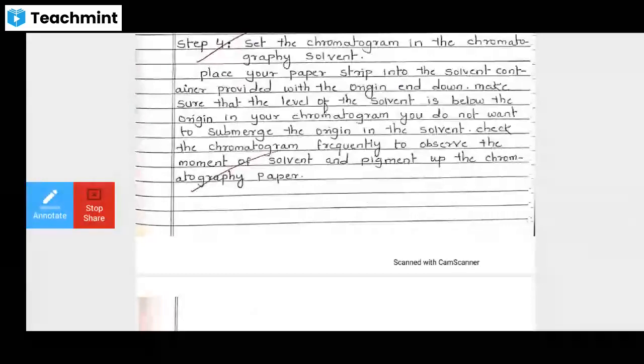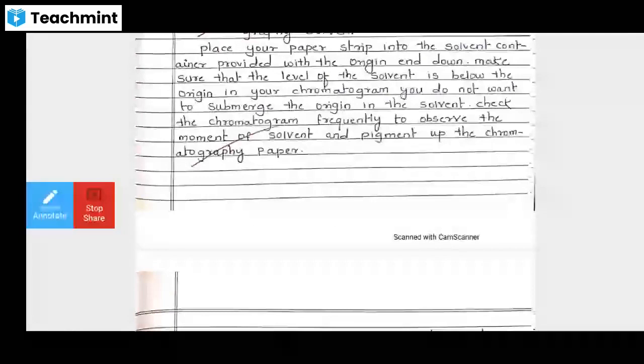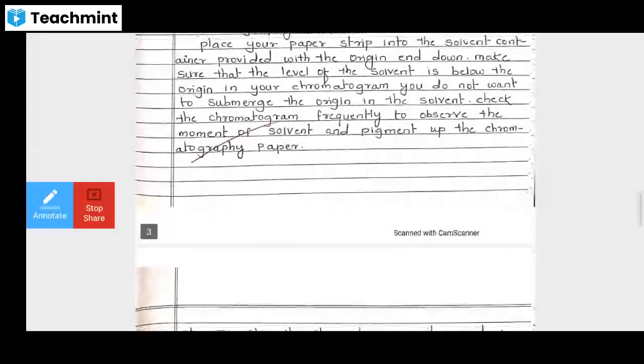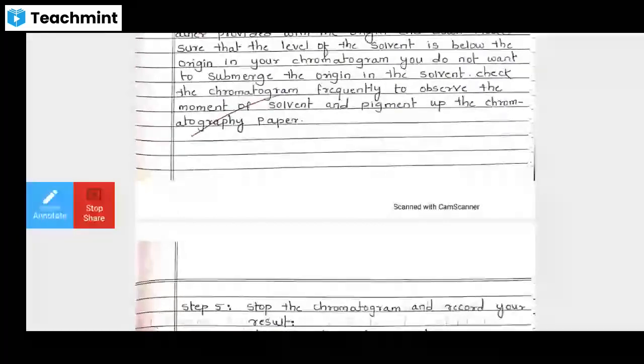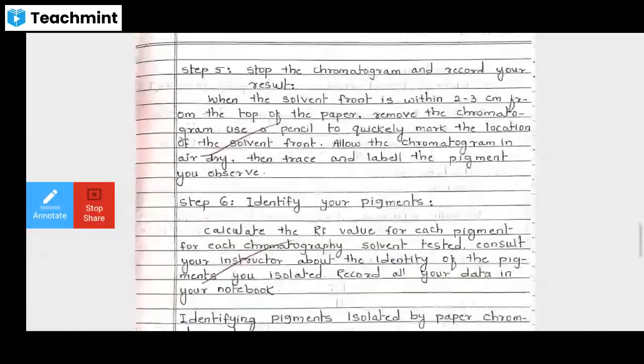When the drop is dry on the slide, place your paper strip into the solvent provided with the original end down - keep it about 1 cm deep. Do not submerge the origin in the solvent. Check the chromatograph frequently and observe the movement of solvent and pigments up the chromatographic paper.